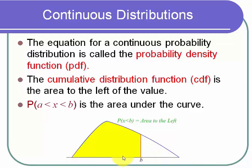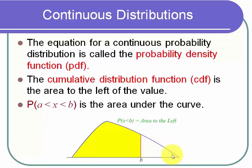There's going to be an infinite, uncountable number of answers you can get when selecting your random variable. Because there's an infinite number, we can't draw a table anymore. Instead we look at a picture like a curve above the x-axis.